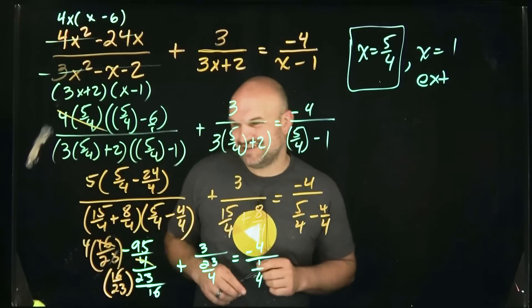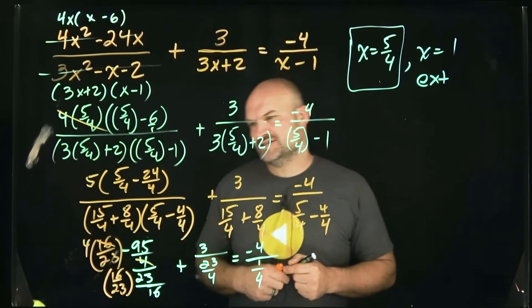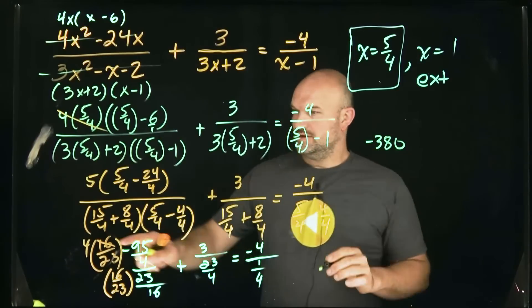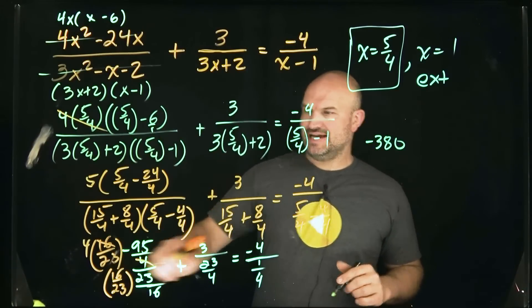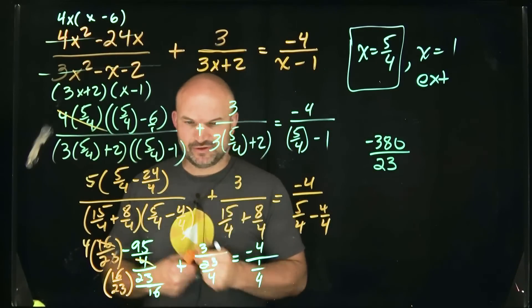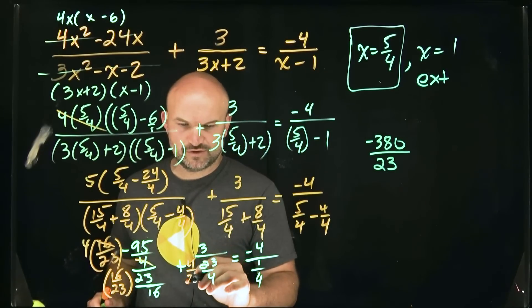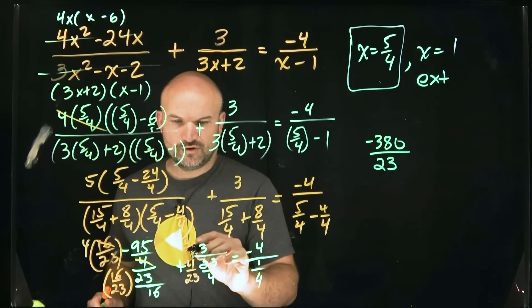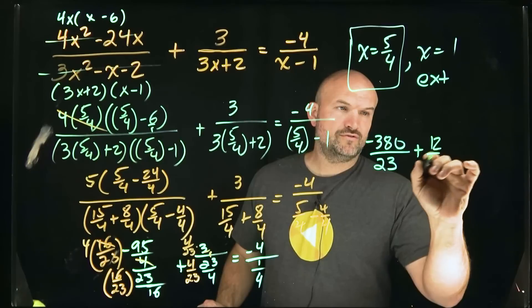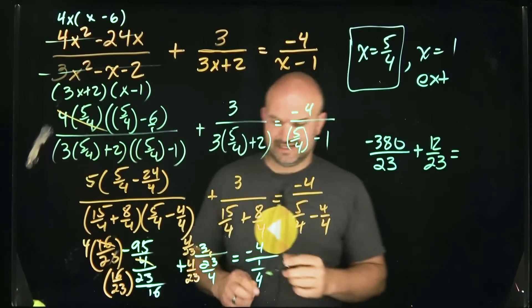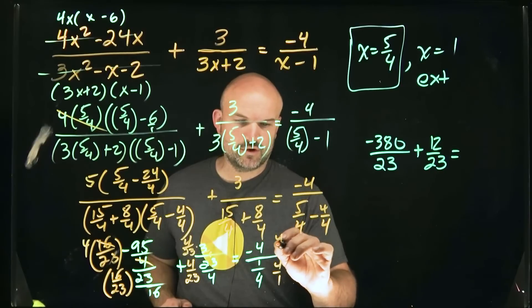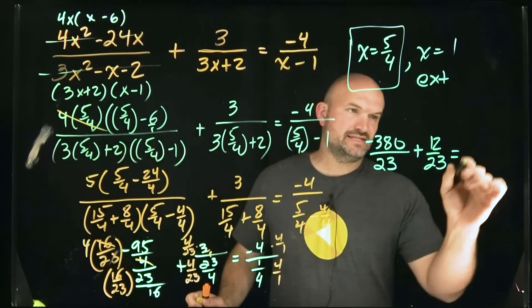My four is going to divide that into there. So really I have four times negative 95. So that's going to be negative 380 divided by 23. And then over here, I can do the same thing, multiplying by the reciprocal. So that's going to be four over 23, four over 23. So that's going to be plus 12 over 23. And that's going to equal to, let's multiply this one by the reciprocal. So four over one times four over one, and that's going to be equal to negative 16.